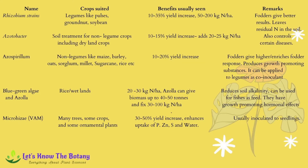This table shows different bio fertilizers suited for different crops and their benefits. For example, Rhizobium strains are associated with legumes like pulses, groundnuts and soybean, and benefit the crop with a 10 to 35 percent increase in yield. It also fixes nitrogen, gives better fodder results, and leaves residual nitrogen in the soil.